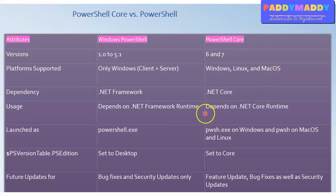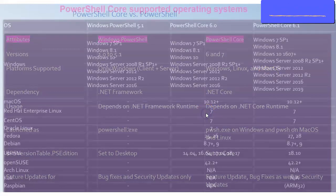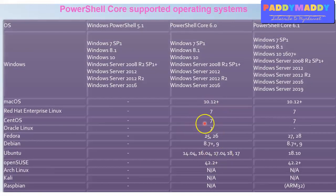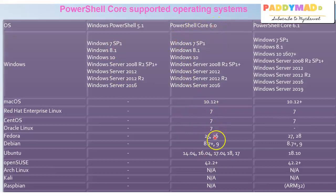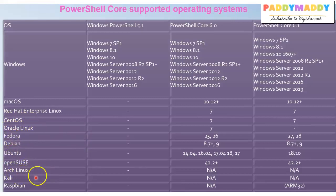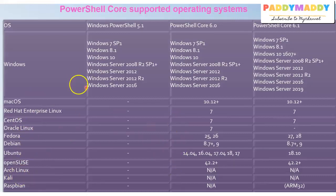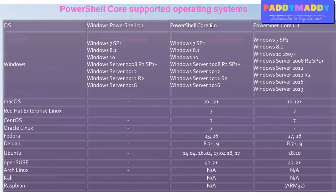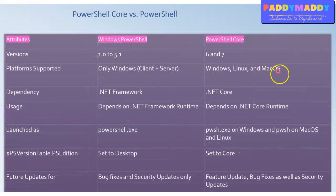We have a different slide which talks about all the different versions. For example, PowerShell Core 6.0 also supports CentOS, Oracle Linux, Debian, Ubuntu, OpenSUSE, and different Linux distributions. These are the major differences in terms of the operating systems that PowerShell Core can support.